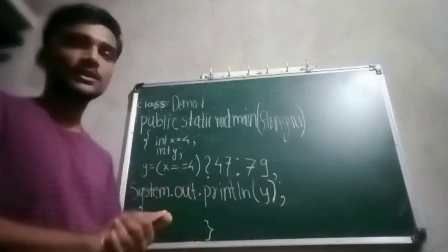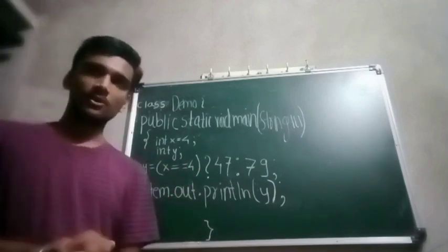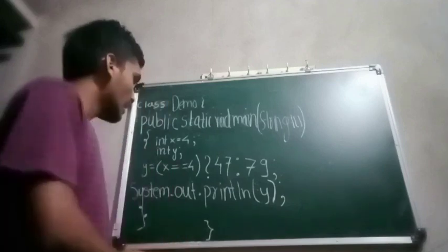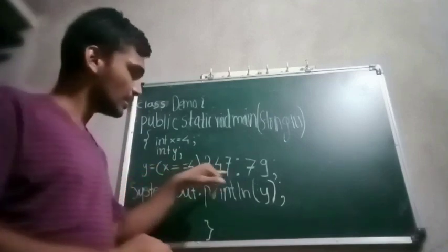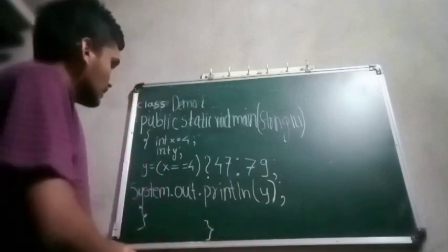We can write this condition with the help of an if-else statement. In if we can write x == 4 and according to it we can print anything inside the if block. This can be written in else also, but with the help of ternary we can write it in only a single line. That's the purpose of the ternary operator.